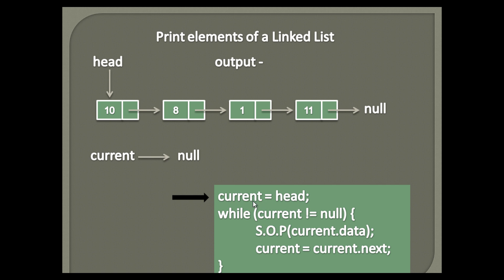The first step is to make the current node point to head. The second step is to execute a few steps in a while loop. The while loop executes till the current node is equal to null. It simply means when current node becomes null, the list has reached its end and there are no more elements to print. Currently, current node points to head, which is not null. Thus, statements in the while loop execute.